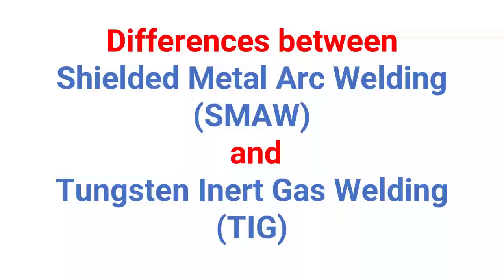In this video we will discuss the differences between SMAW, that is Shielded Metal Arc Welding, and TIG, that is Tungsten Inert Gas welding.